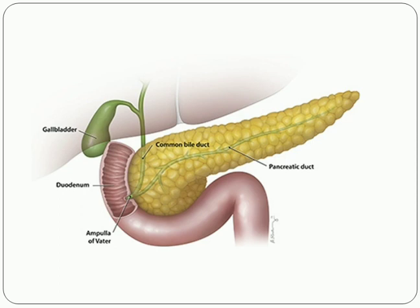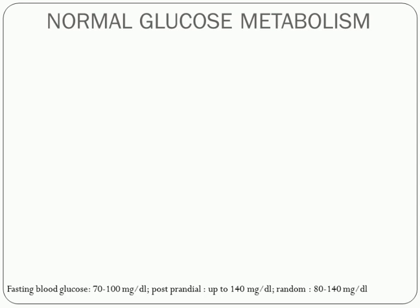Before studying diabetes, we should know how glucose is normally maintained in healthy adults and what the different types of blood glucose levels are. Fasting blood glucose is measured after fasting overnight — not eating for 8 hours — and checking glucose in the morning. This must be 70 to 100 mg per deciliter in normal, non-diabetic individuals. Postprandial blood glucose (PPBG) is measured 2 hours after a meal and must be up to 140 mg per deciliter.